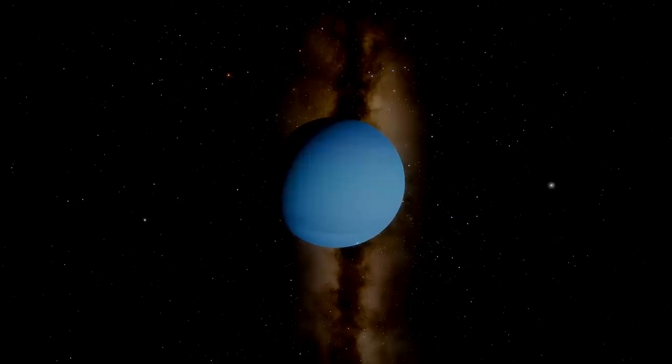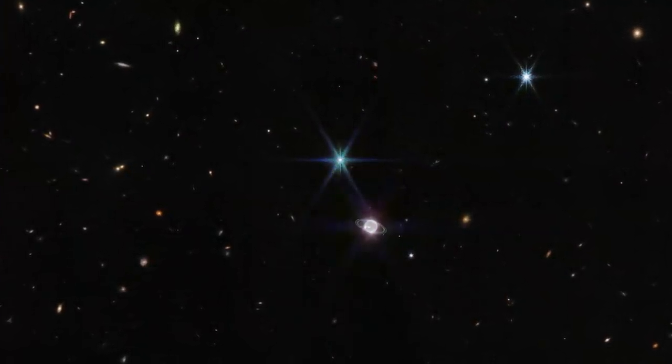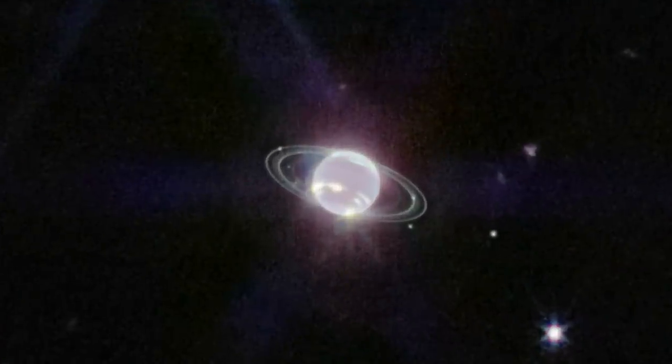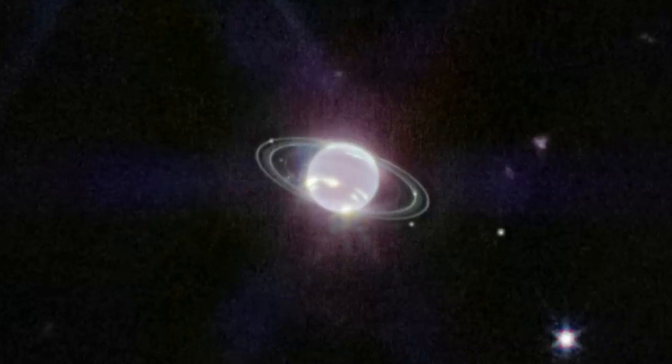To show off its incredible imaging power, the space telescope turned its gaze to the outer solar system with its near-infrared camera, and captured the ice giant planet Neptune like never seen before. What surprised everyone was the rings of dust around the planet.